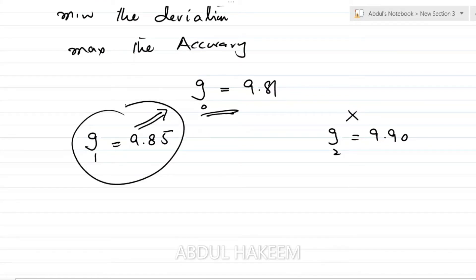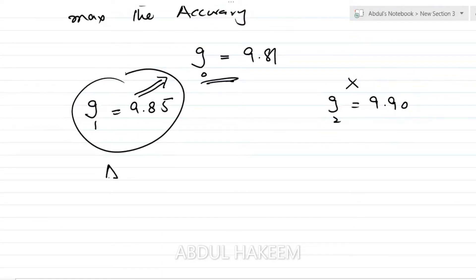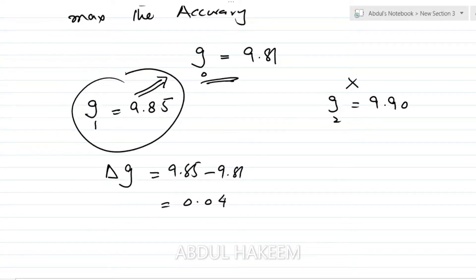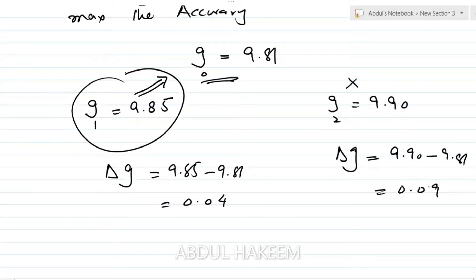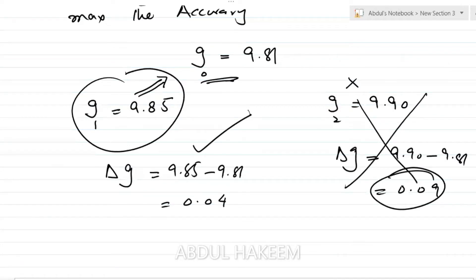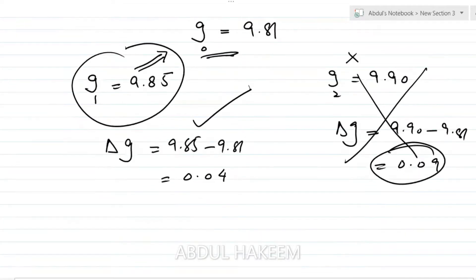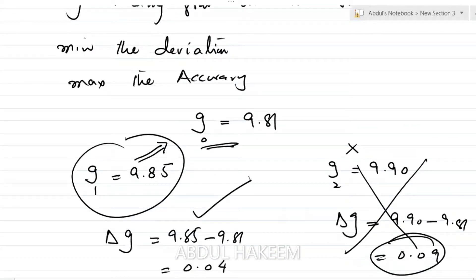This value is most accurate because the deviation — the difference — for G1 is 9.85 minus 9.81, which is approximately 0.04. The difference between the second reading and the true value is 9.90 minus 9.81, which is approximately 0.09. So 0.04 difference is accurate. The reading which is very close to the true value is considered the most accurate reading.